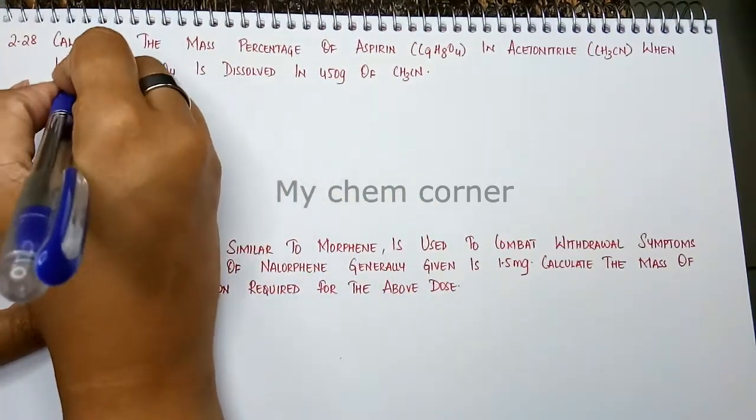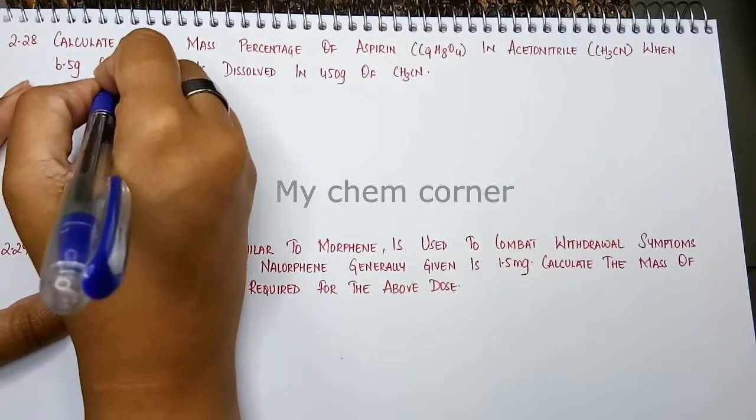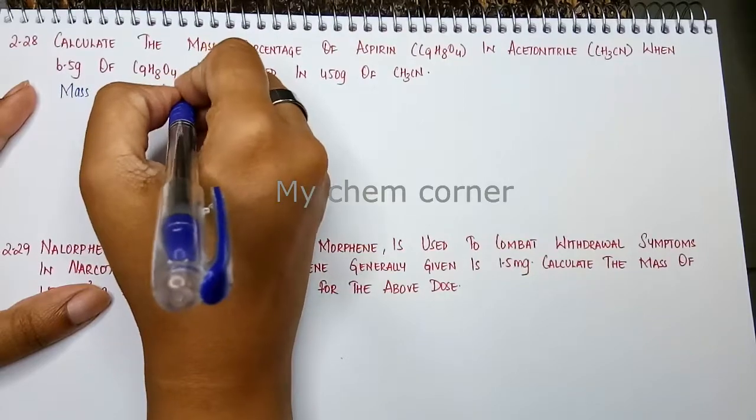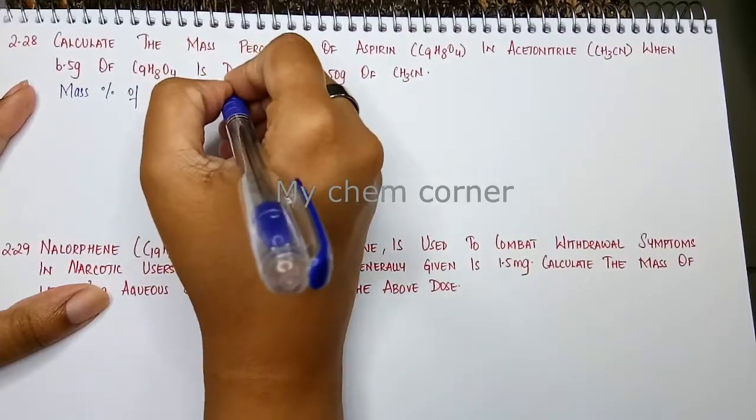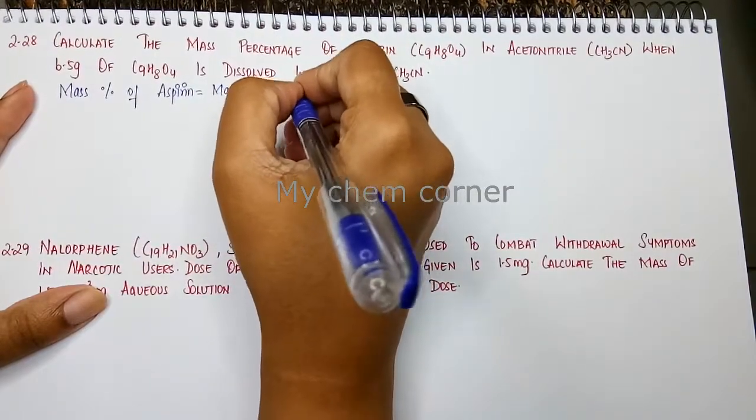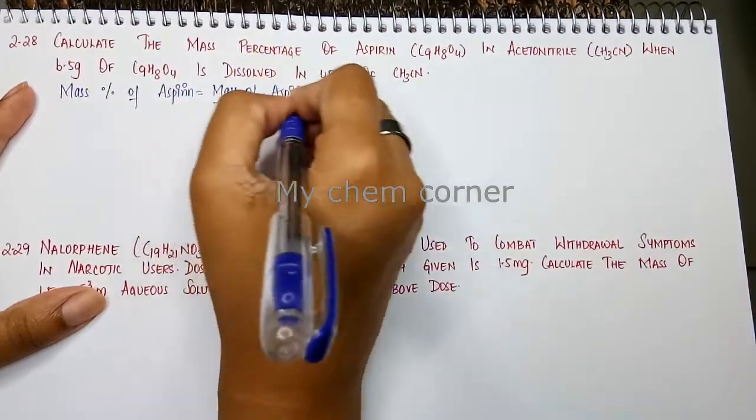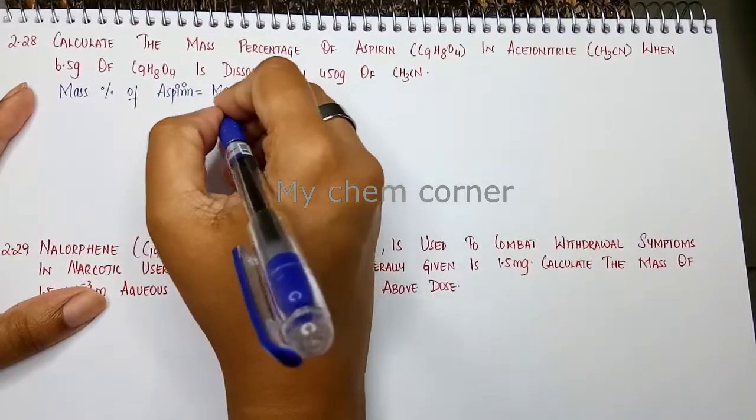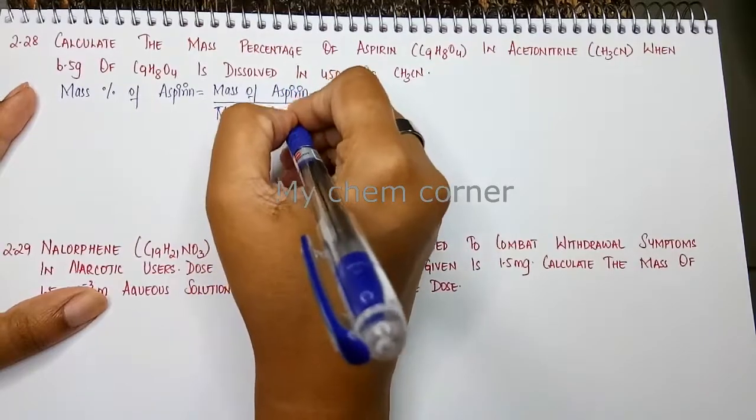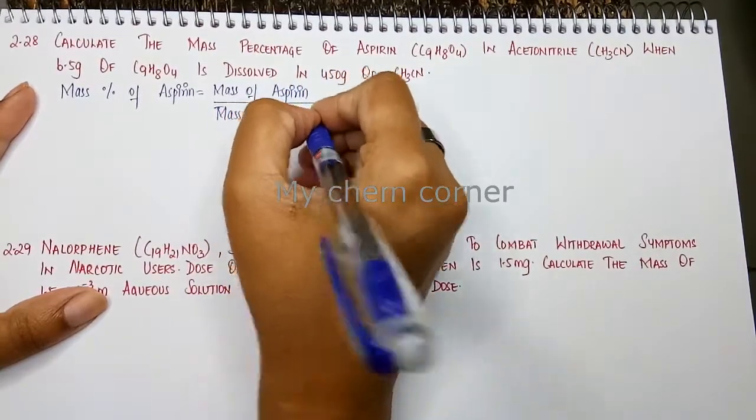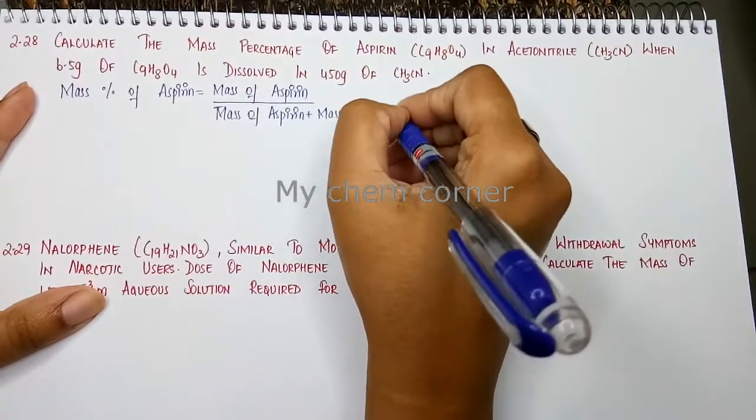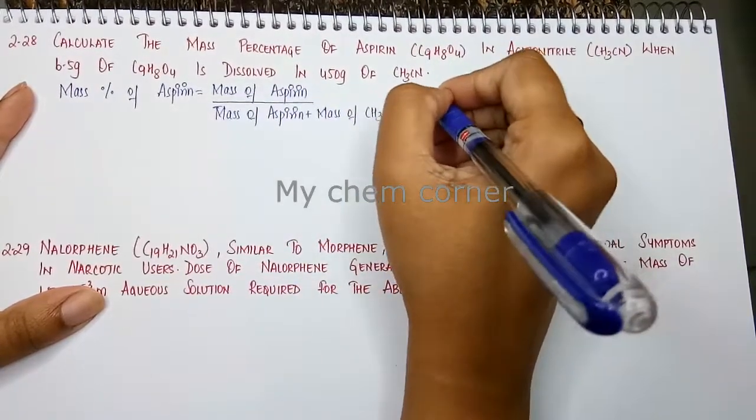Let's write down what is the mass percent formula. Mass percent of aspirin is equal to mass of aspirin divided by mass of aspirin plus mass of acetonitrile, since it's a percentage, into 100.